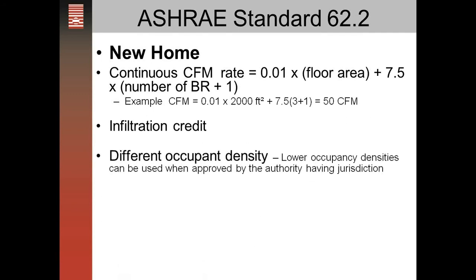If you have a different occupant density — for example, if you have one person in a house — you can lower the occupant densities if you have approval from the authority having jurisdiction. So in the example we used above, that 50 CFM rate could be less if there's only one person in the house, as long as the authority having jurisdiction is okay with that.